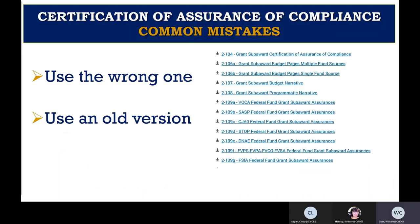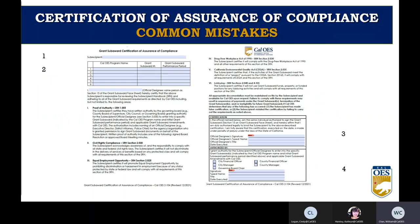For the Certification of Assurance of Compliance documents, a common mistake is signing and submitting the wrong one — you must use the one tied to the fund source for your program. The checklist in Part 3 of the RFP will tell you exactly which one is needed. Another mistake is using an old version; always download the current version from the Cal OES website. Please read this document in full, because when you sign it, you certify that you are compliant.